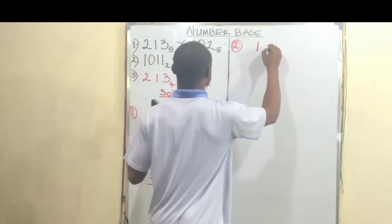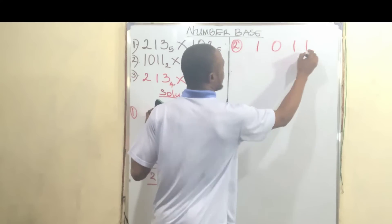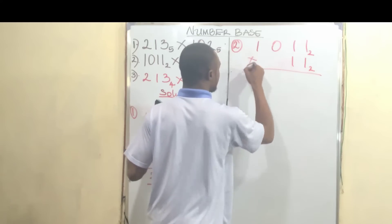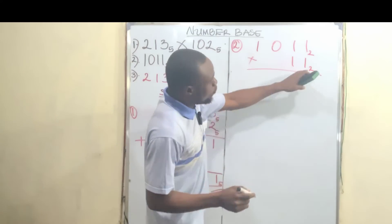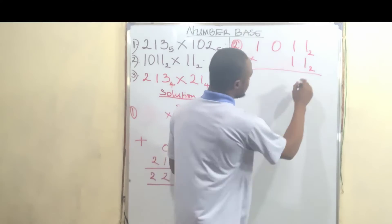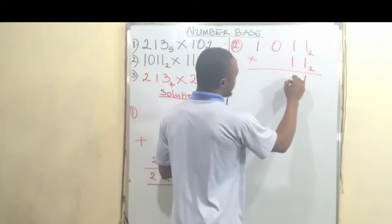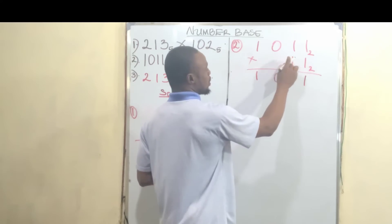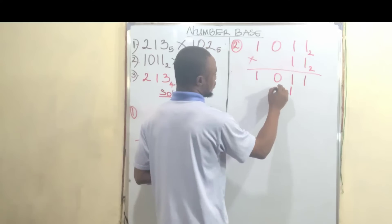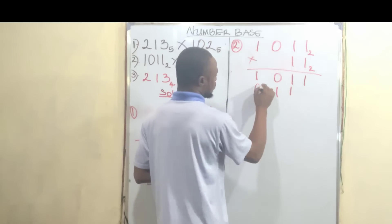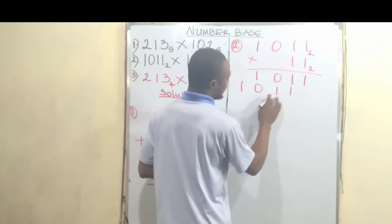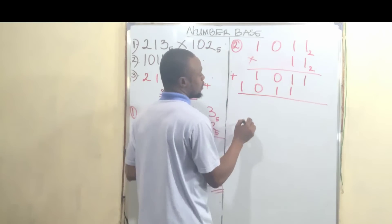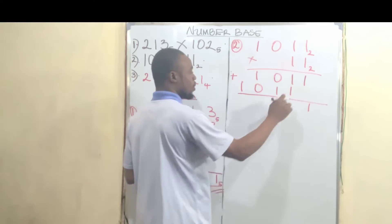Number 2: we have 1011 base 2 and 11 base 2. So multiplying: 1 multiplied by 1 is 1, 1 multiplied by 1 is 1, 1 multiplied by 0 is 0, 1 multiplied by 1 is 1. Then the next row: 1 multiplied by 1 is 1, 1 multiplied by 1 is 1, 1 multiplied by 0 is 0, 1 multiplied by 1 is 1. Now draw a line and add.